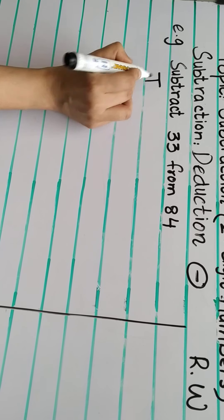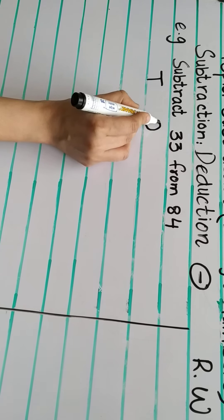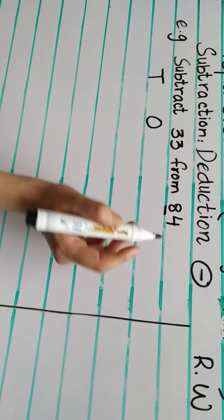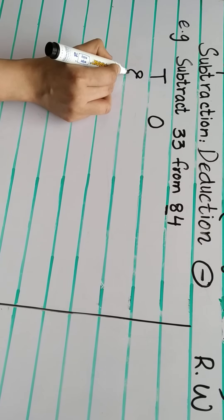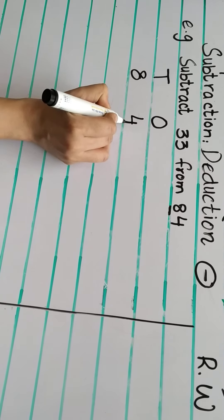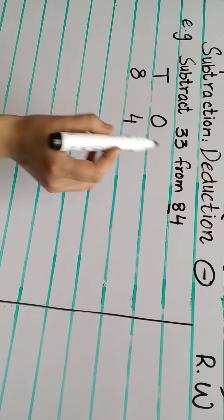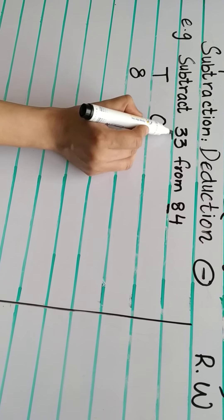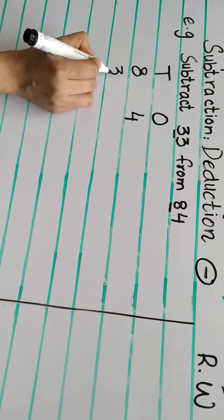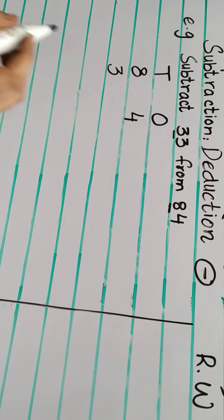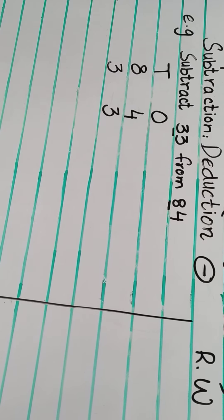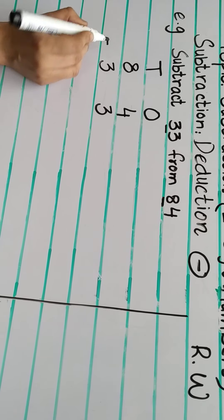We have the tens column and the ones column. First, we will write 84 — 8 in the tens column and 4 in the ones column. From 84 we will subtract 33. Write 3 in the tens column and 3 in the ones column. Put the minus sign.